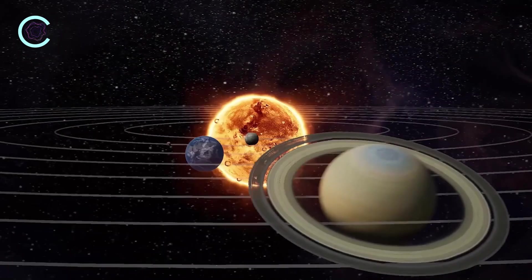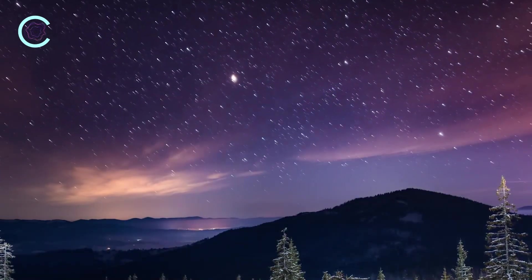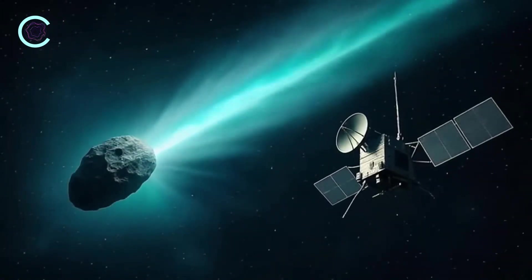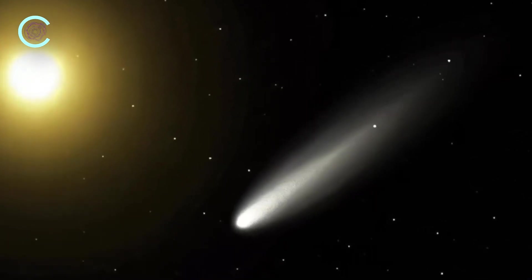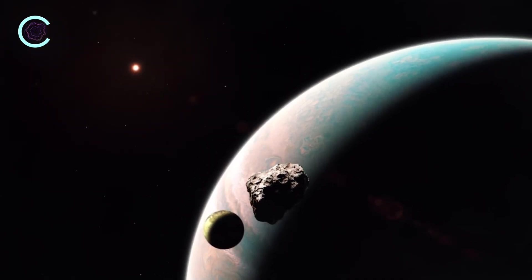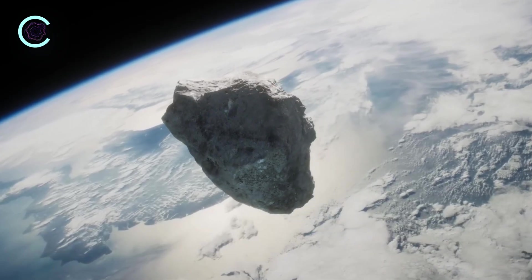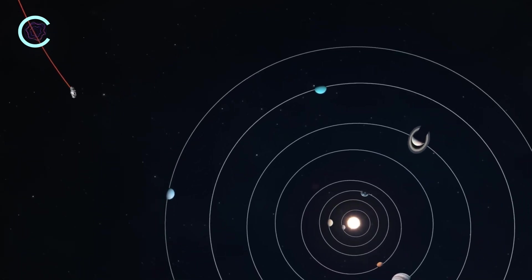Right now, something unusual is happening out there in deep space. Something we were never really prepared to deal with. An object from far beyond our solar system has slipped into our cosmic neighborhood, and astronomers have named it 3I Atlas. But over the months we've observed it, a strange pattern has started to form. The more we learn about this thing, the more it feels like we might not be the ones doing the observing. There's evidence suggesting this mysterious object may have been aware of our solar system long before we even knew it existed.